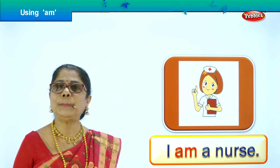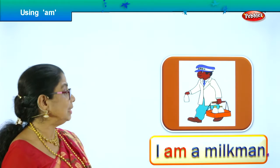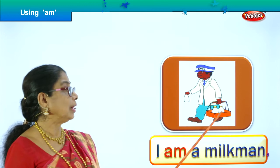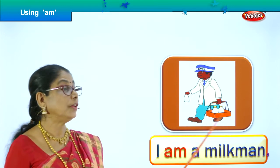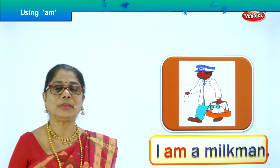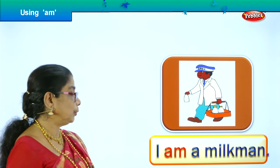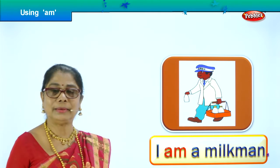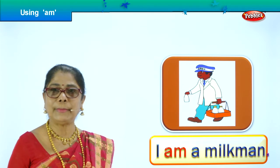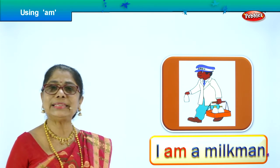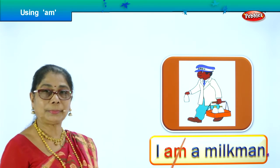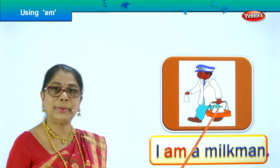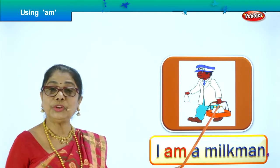Let's take a new picture. Look at this — he has got a tray full of milk bottles. If you ask him 'Sir, who are you?', he will say: 'I am a milkman.' What does he give you, what does he sell? He sells milk. 'I am a milkman' — the milkman brings milk to your home.